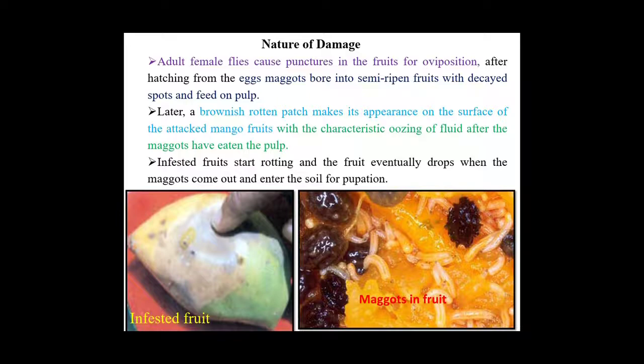Nature of damage by fruit fly: adult female flies cause punctures in the fruits for oviposition. After hatching, maggots bore into semi-ripened fruits with decayed spots and feed on the pulp. A brownish rotten patch appears on the surface of attacked fruits with characteristic oozing of fluid. Infested fruits start rotting and eventually drop down, and the feeding maggots come out and enter the soil for pupation.